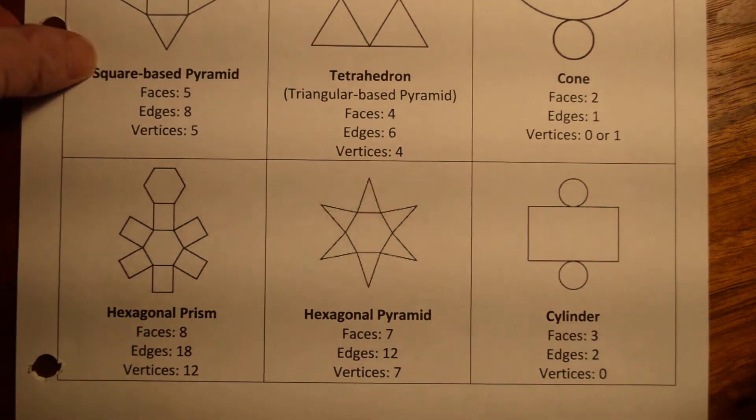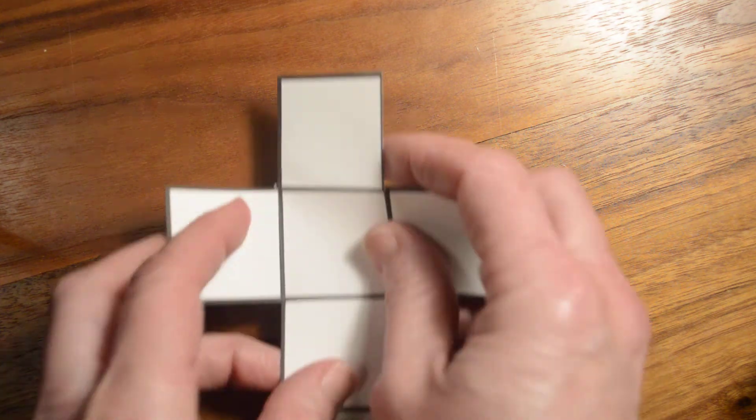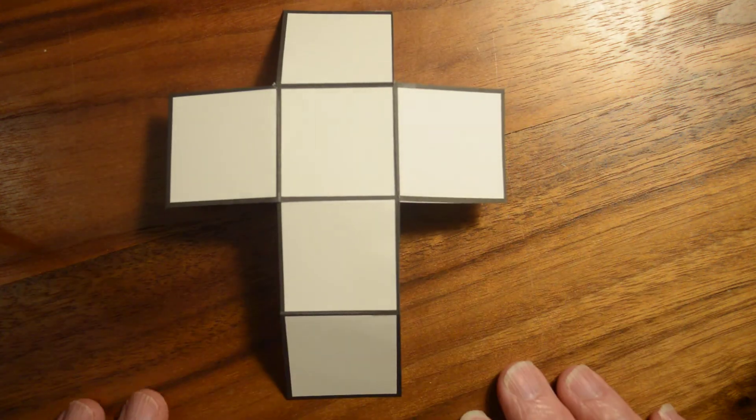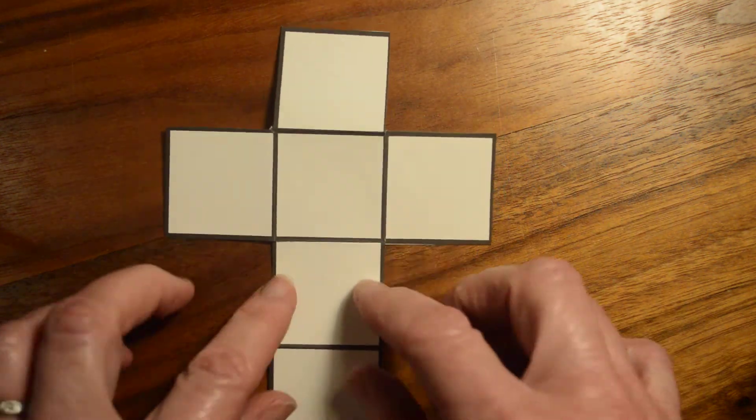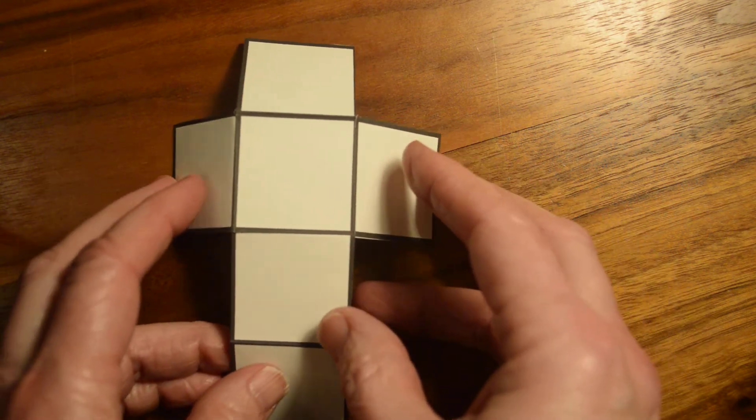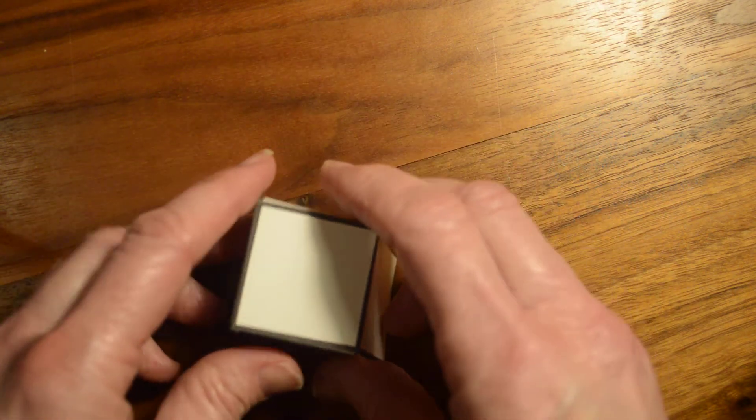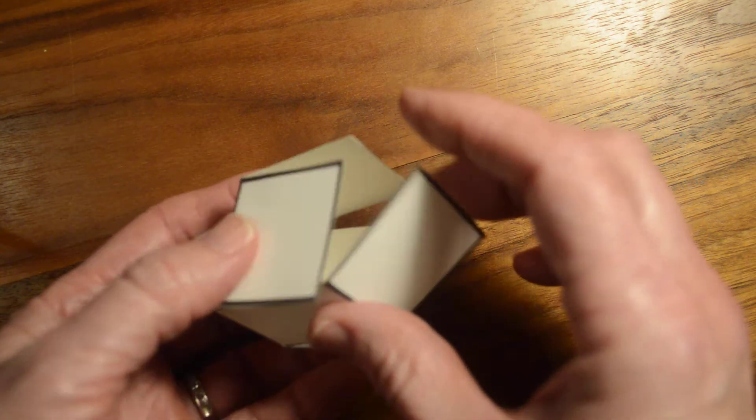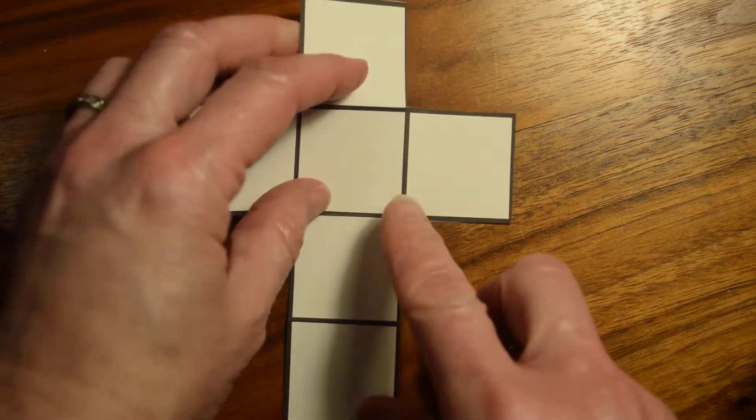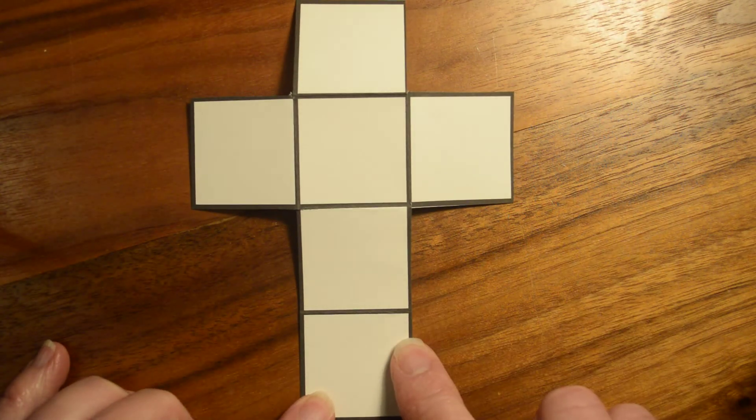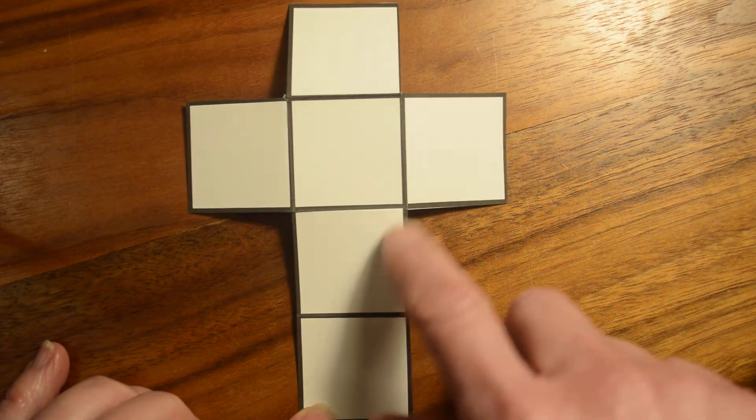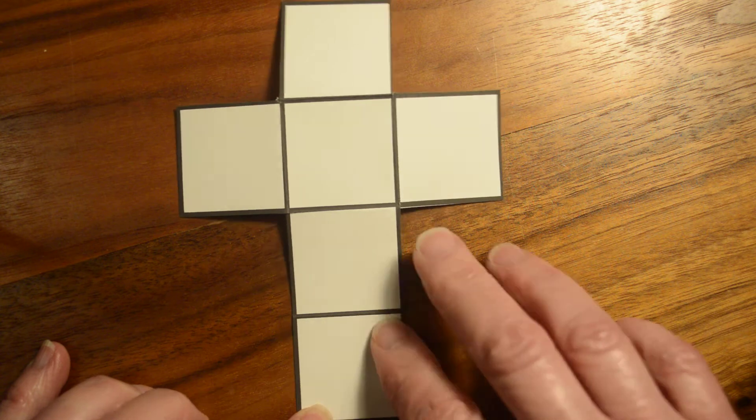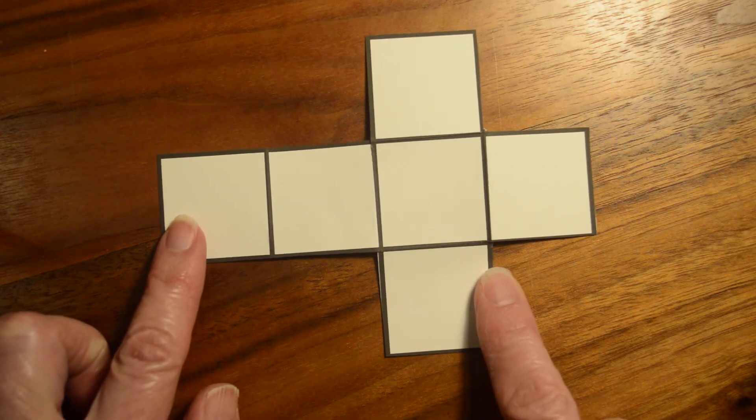But let me just show you what some of these look like in real life. So for example, this is a net of a cube. And what that means is if I take this shape and I've already pre-folded everything, but when I fold it up like this, I end up with a cube. That's going to help us when we do the surface area, because if we know what the net looks like, then we know the areas of each of the shapes that we need to add together to get the surface area.